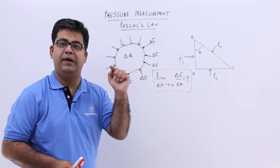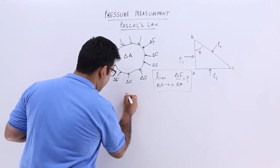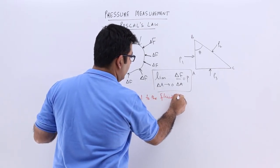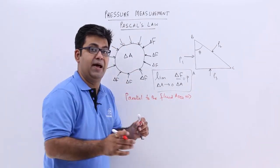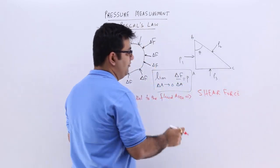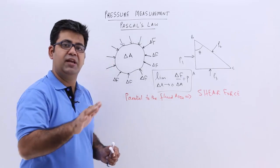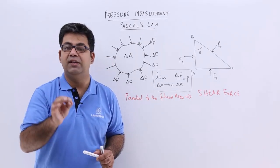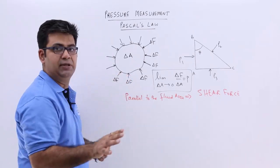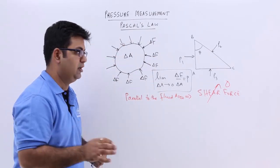The force has to be always perpendicular to the fluid area. There can also be a force which is parallel to the fluid area — this is called the shear force. A very important difference: shear force comes into picture only when your fluid is in motion, that is, when two adjacent layers of fluid are in relative motion with each other. If your fluid is at rest, there is no shear force — no component of force parallel to the fluid area.